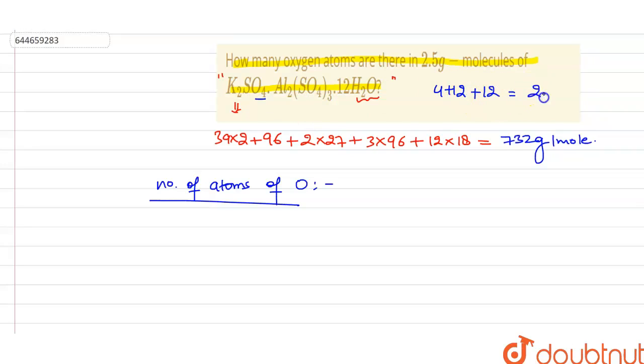On solving it, what we will get: 12 plus 12, 24, 28. So 28 atoms of oxygen are present.